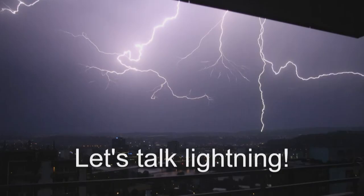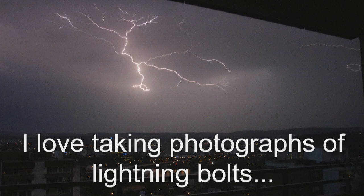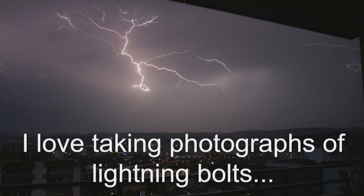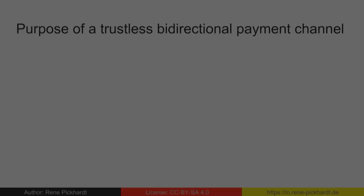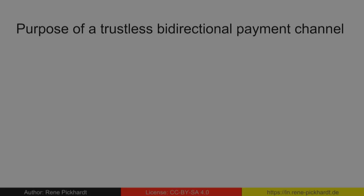Let's talk Lightning. Let's really start with the construction of payment channels, or RSMCs—Revocable Sequence Maturity Contracts. Let's talk about the purpose of creating a trustless bidirectional payment channel. Everybody wants to scale Bitcoin, and we assume this is the scaling solution, but let's take it step by step.